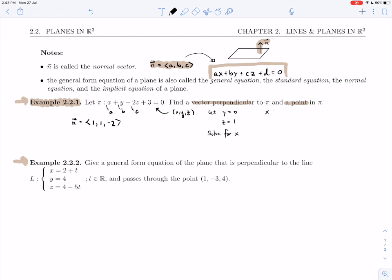So if I plug into the equation here, I'll get x plus y is 0, so x plus 0 minus 2 times z, I said was 1, plus 3 equals 0. So x plus 1 is equal to 0. X is minus 1. That's telling me that the point minus 1, 0, 1 is on the plane.